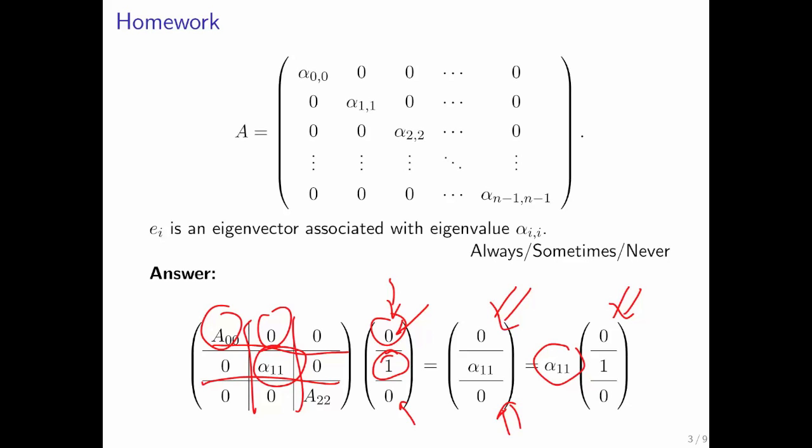And bingo, you have shown that the i-th unit basis vector is an eigenvector associated with the eigenvalue that is that particular diagonal element, the i-th diagonal element.